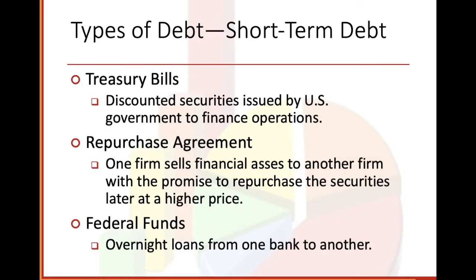Types of debt — short-term debt. There are treasury bills, discounted securities issued by the U.S. government to finance operations. Repurchase agreement: one firm sells financial assets to another with a promise to repurchase the securities later at a higher price. And federal funds: overnight loans from one bank to another.